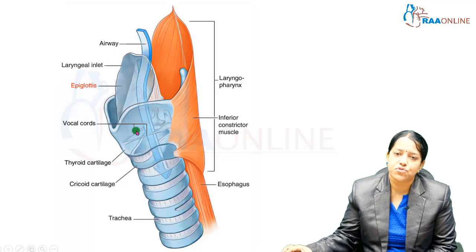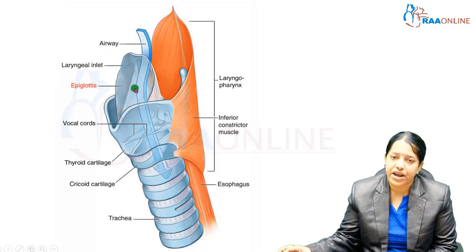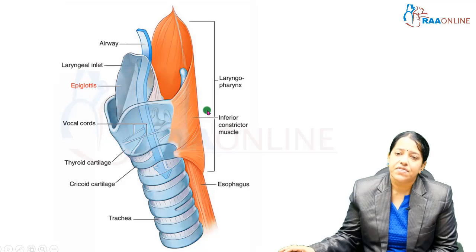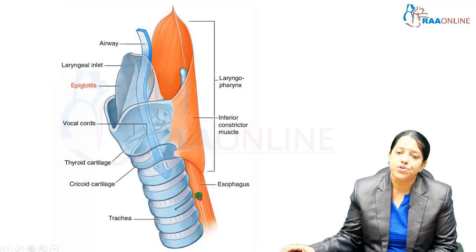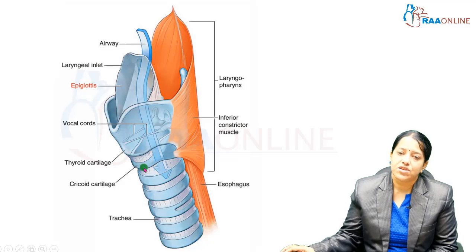During deglutition — when we swallow food — the inlet of the larynx closes so food goes into the laryngopharynx and then into the oesophagus. You can see the trachea is in front of the oesophagus, and the larynx ends at the level of the lower border of the cricoid cartilage.